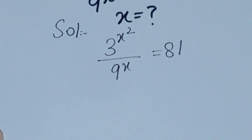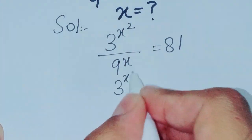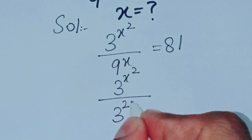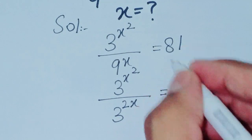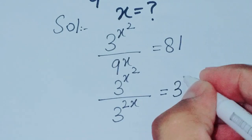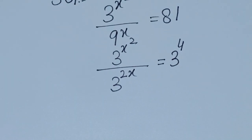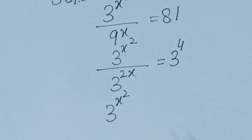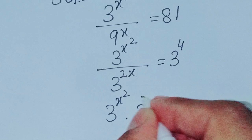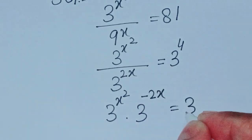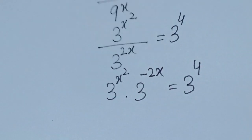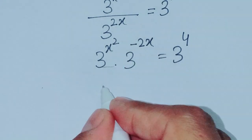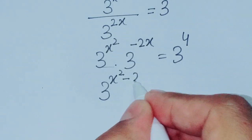We know that 9 is 3 squared, so 9 power x becomes 3 power 2x. Also, 81 is 3 power 4. So we can rewrite the equation as 3 power x squared into 3 power minus 2x is equal to 3 power 4.